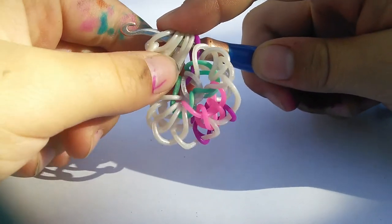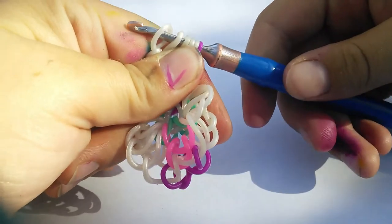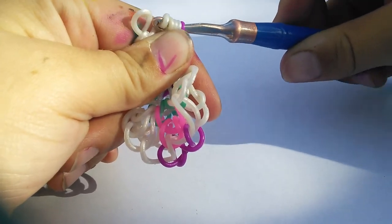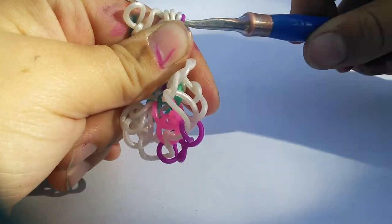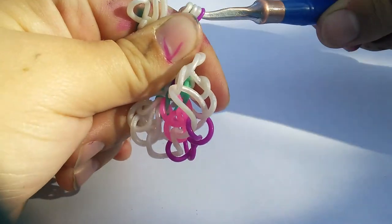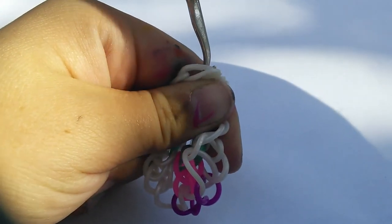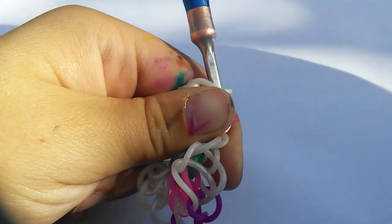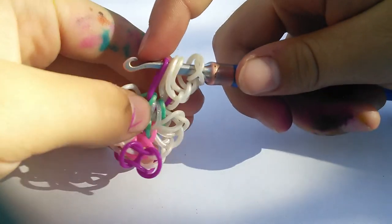Okay. So now we're going to do the same thing we just did. Pinch all the rubber bands, slide them off your hook and then slide them back on in reverse order so you get this.